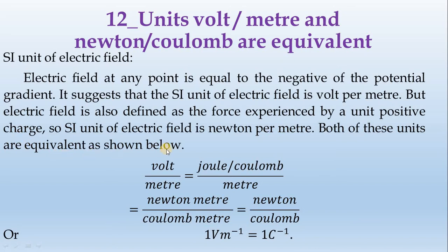This is the equivalence of the two units. Volt per meter is equal to joule per coulomb divided by meter. This is the equivalent of volt per meter. Volt per meter is equal to dV by dr, that is equal to joule per coulomb divided by meter.